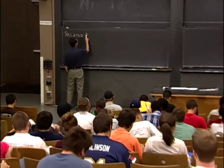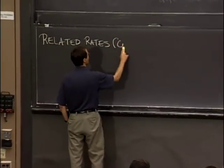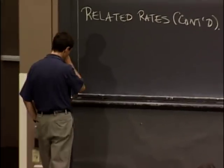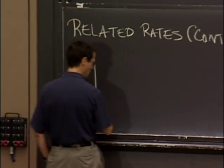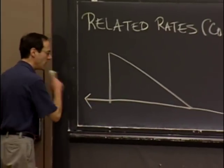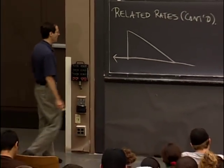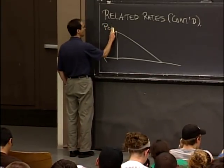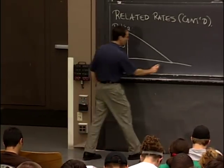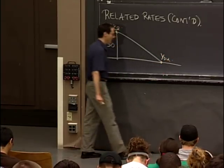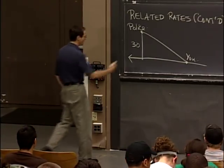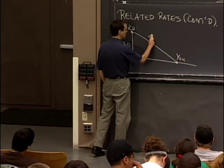Today we're going to keep on going with related rates. You may recall last time we were in the middle of a problem with this geometry. There was a right triangle, there was a road going from right to left, and the police were up here monitoring the situation, 30 feet from the road. You're heading this way, and this distance was 50 feet.